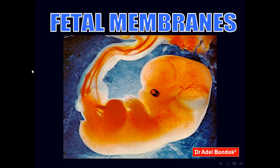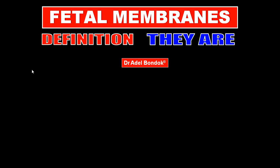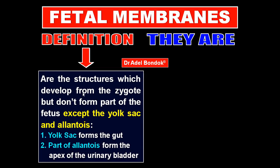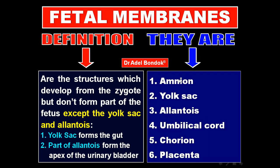Now we'll talk about the fetal membranes. Fetal membranes are the membranes which develop from the zygote but do not form part of the fetus — except the yolk sac and the allantois, because the yolk sac forms the gut and part of the allantois forms the apex of the urinary bladder. The fetal membranes are: amnion, yolk sac, allantois, umbilical cord, chorion, and placenta.